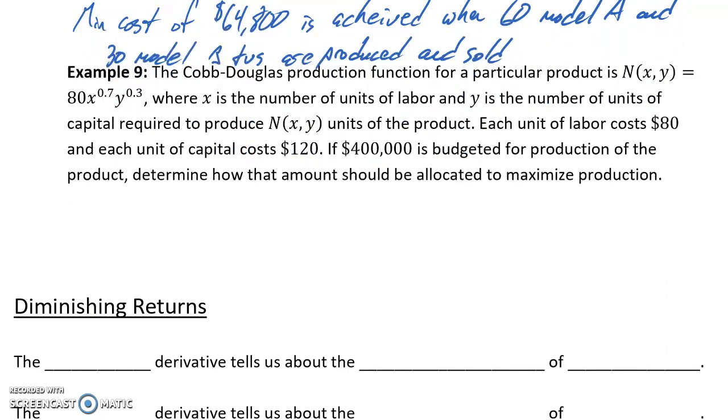In example 9, we're given a Cobb-Douglas production function for a particular product, where x is the number of units of labor, y is the number of units of capital required to produce N units of the product. Each unit of labor costs $80, and each unit of capital costs $120. We have $400,000 budgeted for production of the product. We want to determine the amount that should be allocated to maximize production.